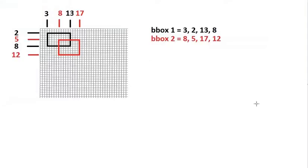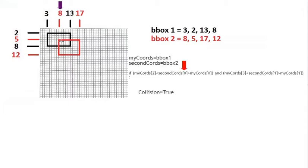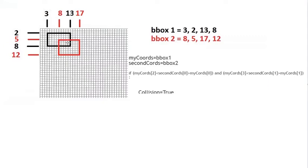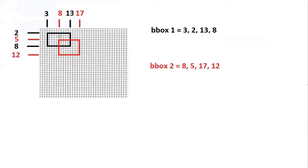So how does it work when we've got two elements involved? We can see here that we have some kind of collision. Basically, when a corner is inside the X range and inside the Y range, we could say we have had a collision. This corner here is at 8, 5 — the 5 is inside the 2 and the 8, and the 8 is inside the 3 and the 13. We can easily see that there is a collision here.